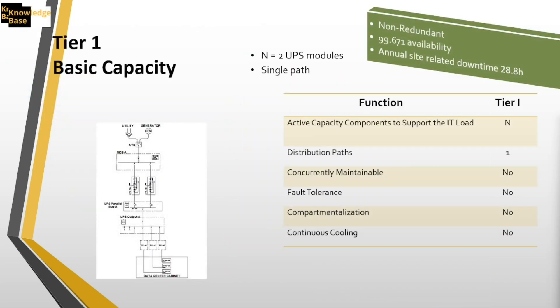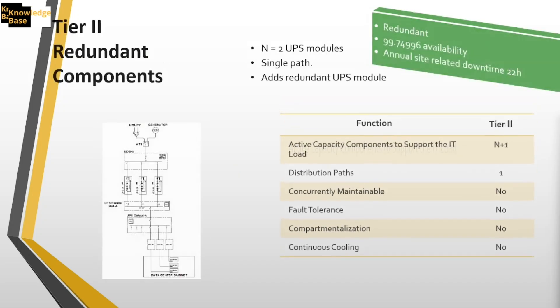Let's look at an electrical system example. In tier 1, it's a non-redundant system — we have N, which is two UPS modules. If N is 100 kW, each module is 50 kW. There is no redundancy — we have only the need, which is two UPSs. That's tier 1. In tier 2, we have N+1 redundancy: three UPSs where two are the need and one is for redundancy. If any UPS fails, power automatically moves to the standby UPS, and there's no interruption to data center operations.